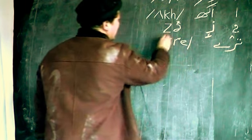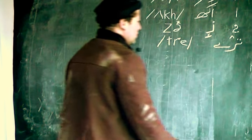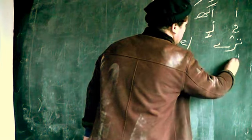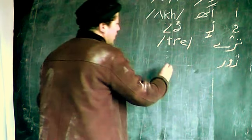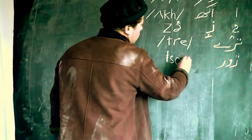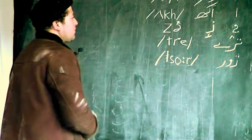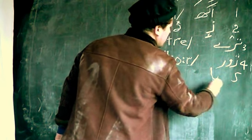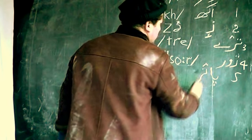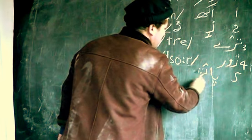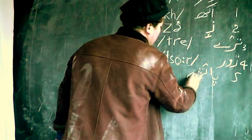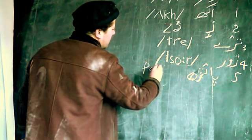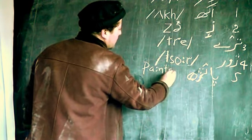Then we have four: 'Sor.' Sor is like this. This is the IPA. This is English IPA, and this is Nastaliq script. Then this is Trey, and this is Sor. Then this is five — we call it 'Pas.' Pas. You can write it like this: Pas.